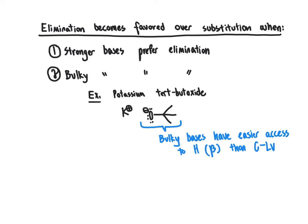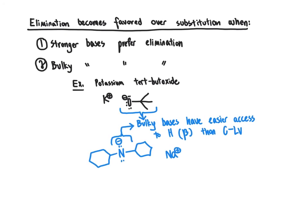Furthermore, if we couple criteria one and two — using a strong base that is also bulky — that makes the situation even more favorable for elimination. For example, a nitrogen anion directly bonded to two relatively bulky groups, countered with sodium as the cation, is another example of a bulky base. That nitrogen anion is even more basic than an oxygen anion because nitrogen is less electronegative than oxygen and therefore less stable as an anion — hence a stronger base. So it fits criteria one and two very well.